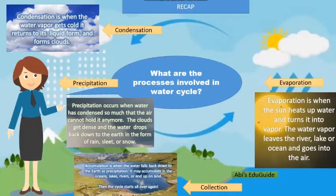Accumulation or collection is when the water falls back to the earth as precipitation. It may accumulate in the oceans, lakes, rivers, or end up on land. Then the cycle starts all over again.